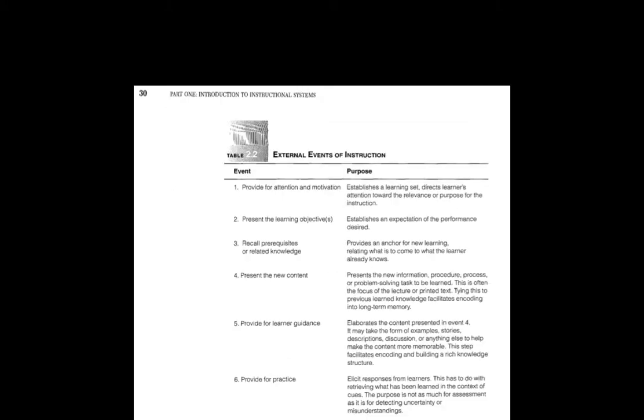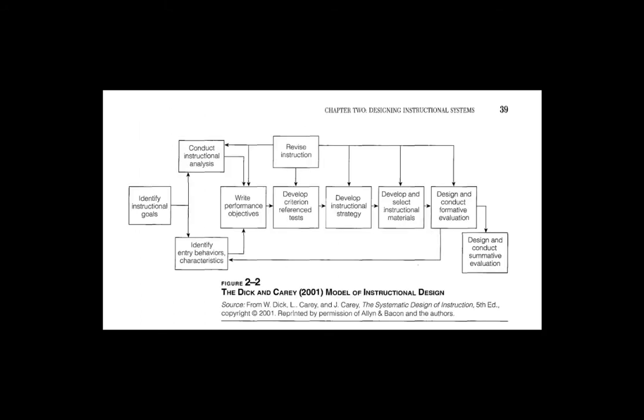You might want to copy or print the following for future reference. I've attached these pages in a digital form for easy reference. On page 22, there's a table with a nice summary of the ADDIE components. On page 30, there's a list of Gagné's nine events of instruction. While I don't feel this is an exhaustive list, his nine events are often referenced in the literature. On page 39 is a graphic of the Dick and Carey model of instructional design. In your design project, you'll be following components from both ADDIE and Dick and Carey.